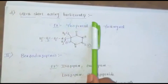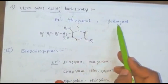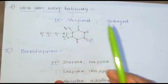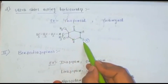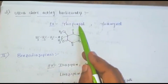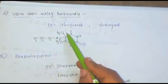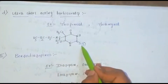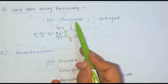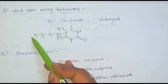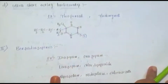Ultra short-acting barbiturates — example: thiopental. 'Thio' indicates sulfur, and 'penta' indicates a pentyl side chain. A thio (sulfur) group is substituted at the second position, and a pentyl side chain is substituted at the fifth position. That is called thiopental.